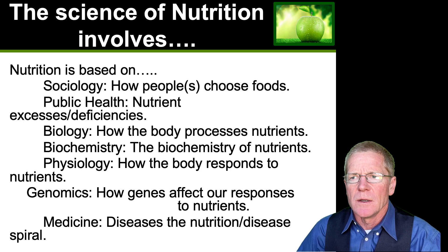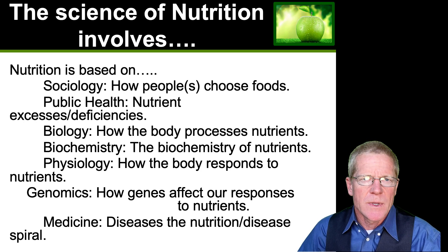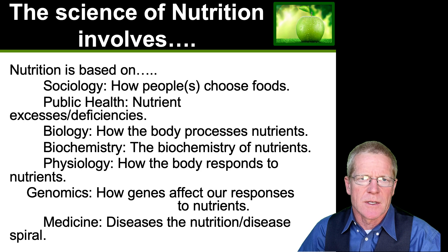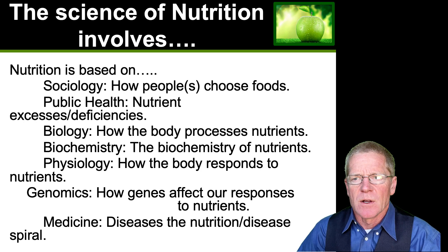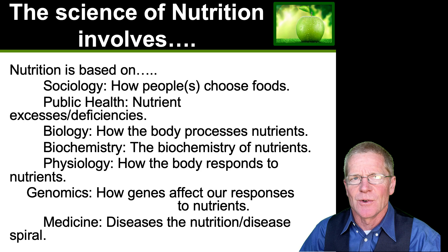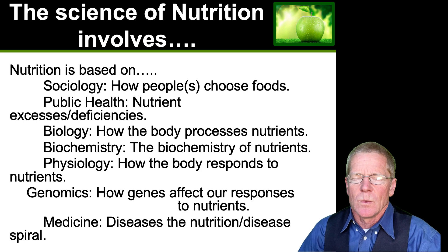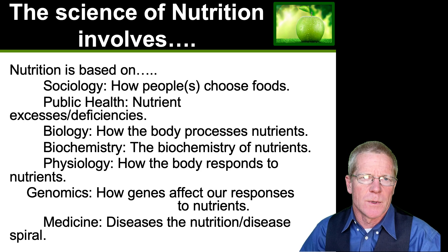Biology covers how your body processes nutrients, which is specific to you, although that can be altered somewhat through healthy choices. Biochemistry covers the biochemistry of nutrients, and physiology covers how the body responds to those nutrients — we're all aware of sugar crashes after a sugar high. And genomics: our genes and genetics affect how we respond to nutrients, and that differs from person to person.